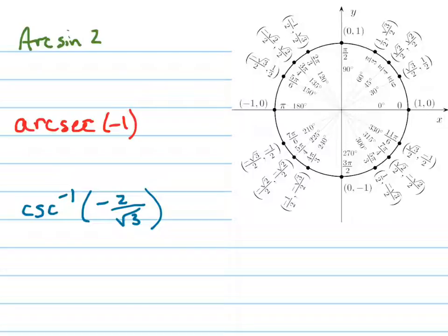Remember if there's a capital A, that means it's a function, which means the range is restricted. And in the case of sine, the range would be restricted to the first and fourth quadrant.